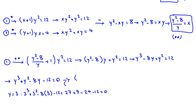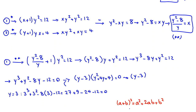We factor the cubic as (y − 3)(y² + 4y + 4) = 0. The quadratic y² + 4y + 4 is a perfect square, equal to (y + 2)². So the full factorization is (y − 3)(y + 2)² = 0, giving roots y = 3 or y = −2.